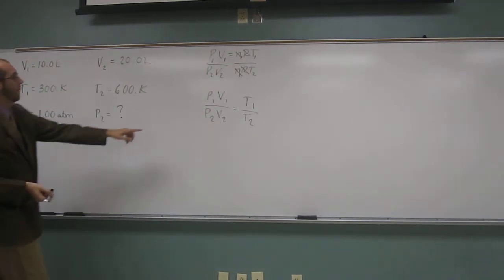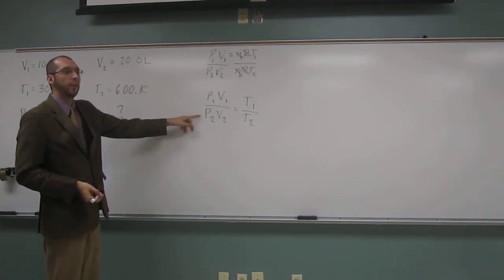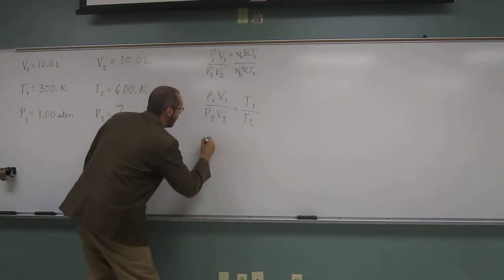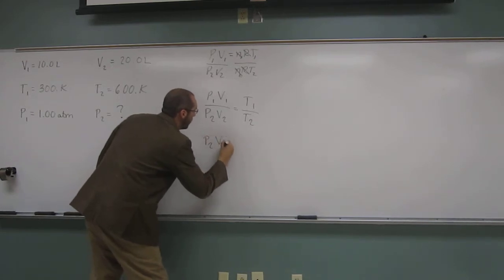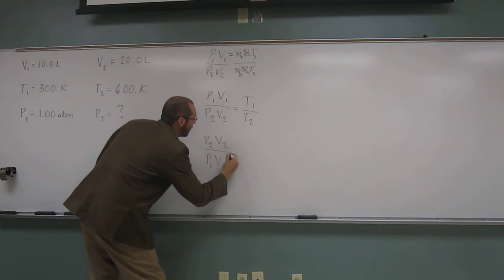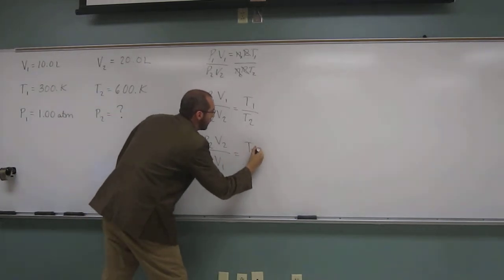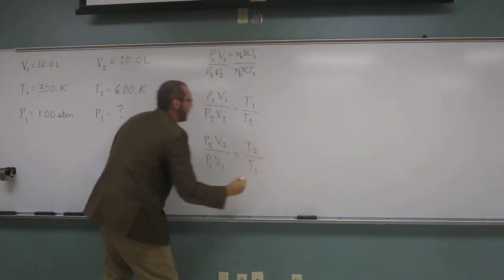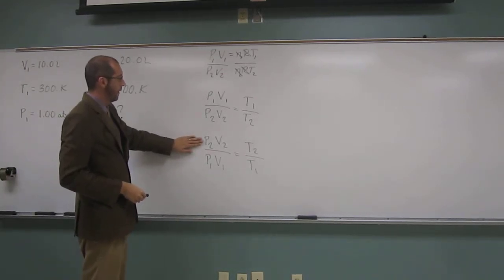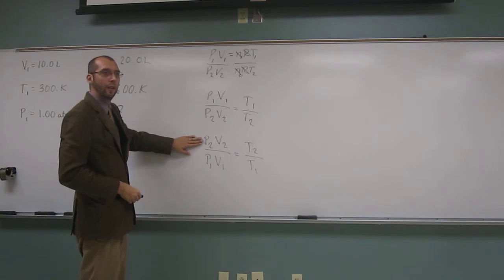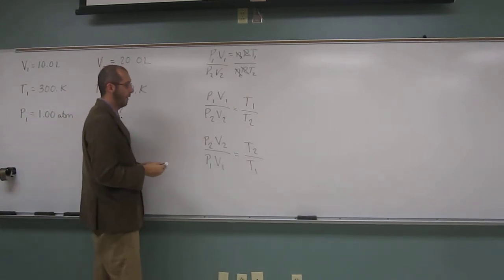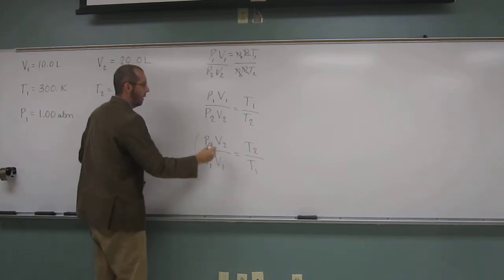Okay? So remember, we're looking for P2. So the first thing we're going to do is what? Flip, right? We're going to flip them over. So P2V2 divided by P1V1 equals T2 divided by T1. Okay? Remember, we've got to isolate P2. So can anybody tell me what we need to do? Multiply both sides by what? P1V1.